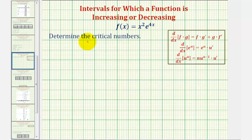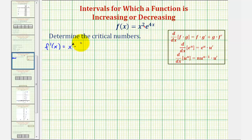To find the critical numbers, we need to find the derivative function and determine for which x values the derivative function is equal to zero or undefined. Since our function is x squared times e to the 4x, we'll apply the product rule: f prime of x equals the first function, x squared, times the derivative of the second function, e to the 4x, plus the second function, e to the 4x, times the derivative of the first function, x squared.